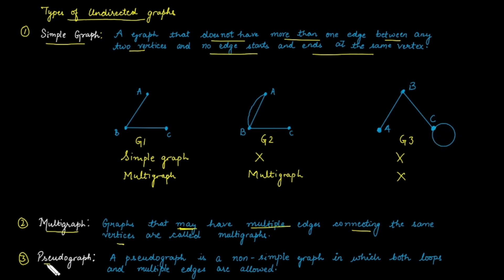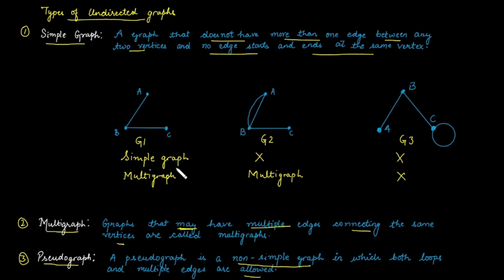The next category is a pseudograph. A pseudograph is a non-simple graph in which both loops and multiple edges are allowed. So if the graph is simple, it is not a pseudograph. G1 is a simple graph, so it is not a pseudograph.